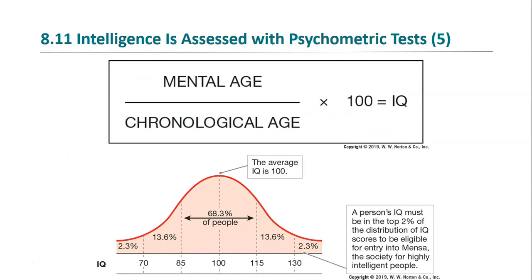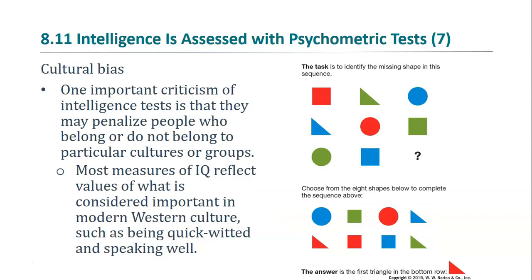For adults, IQ scores are plotted along a normal curve such that the average individual has an IQ of 100, and 95% of people have an IQ between 70 and 130. One of the major criticisms of intelligence tests is that they are biased towards Western culture and its particular values. Some attempts have been made to develop culture-fair or even culture-free tests, though progress has been slow in this area.